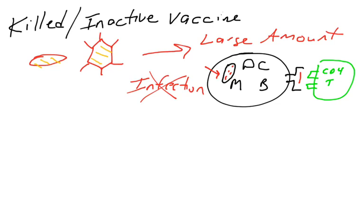There's no natural infection that occurs using a killed or an inactivated vaccine. These pathogens are going to be typically taken into either dendritic cells or macrophages or B cells, the professional antigen presenting cells, taken in via phagocytosis or receptor-mediated endocytosis, which means they'll be presented on MHC class II molecules, which means they'll produce primarily a CD4 T cell response.